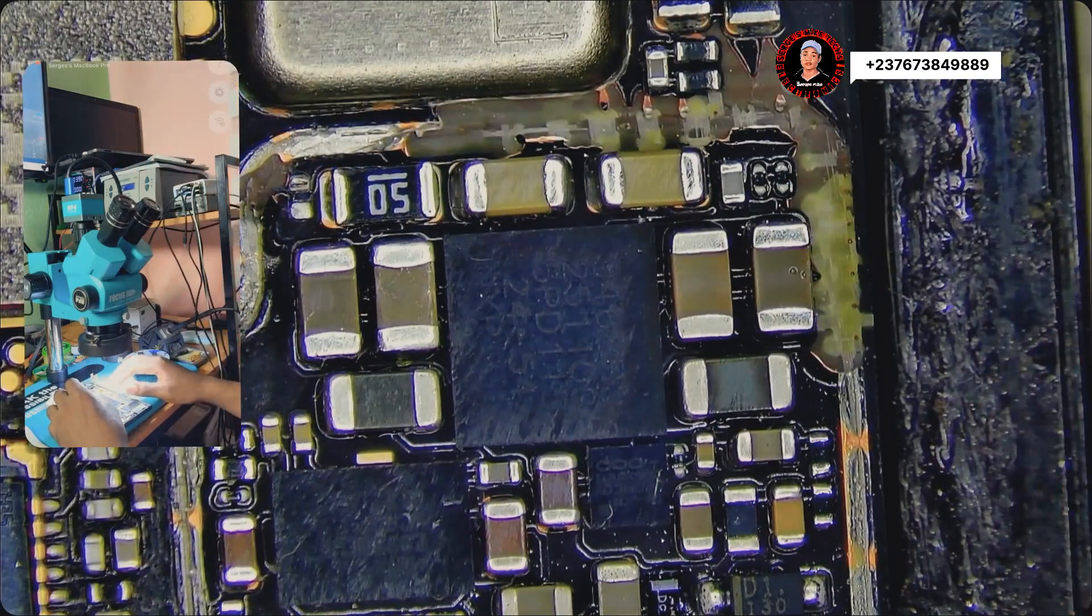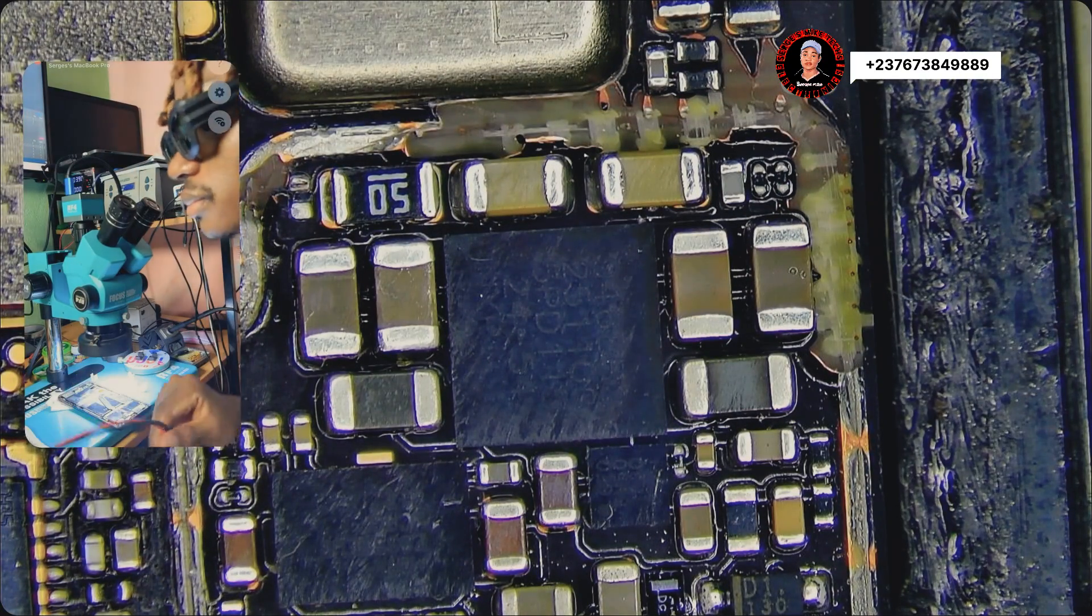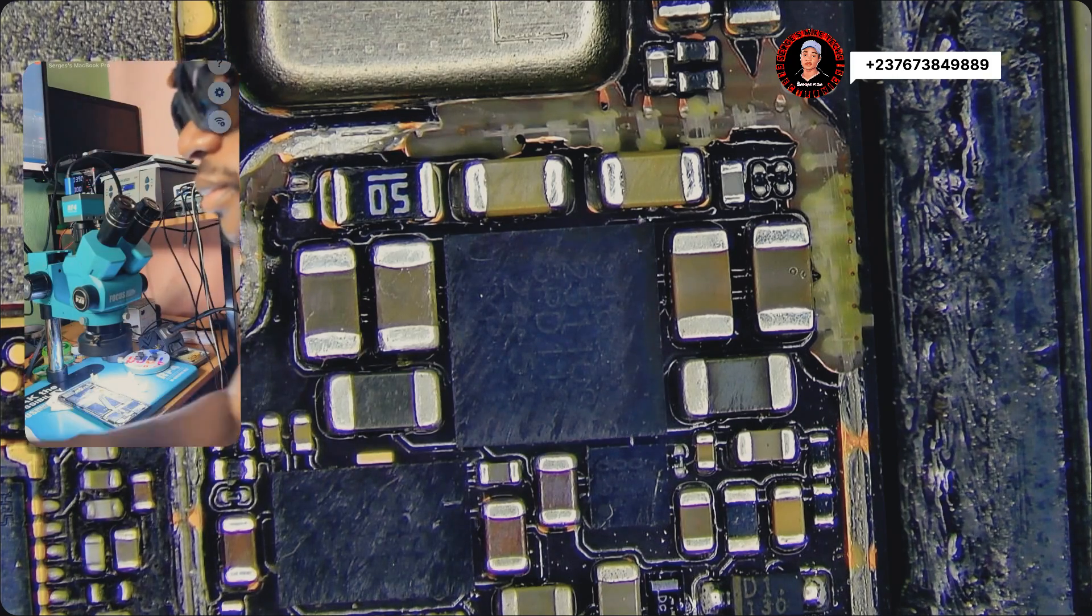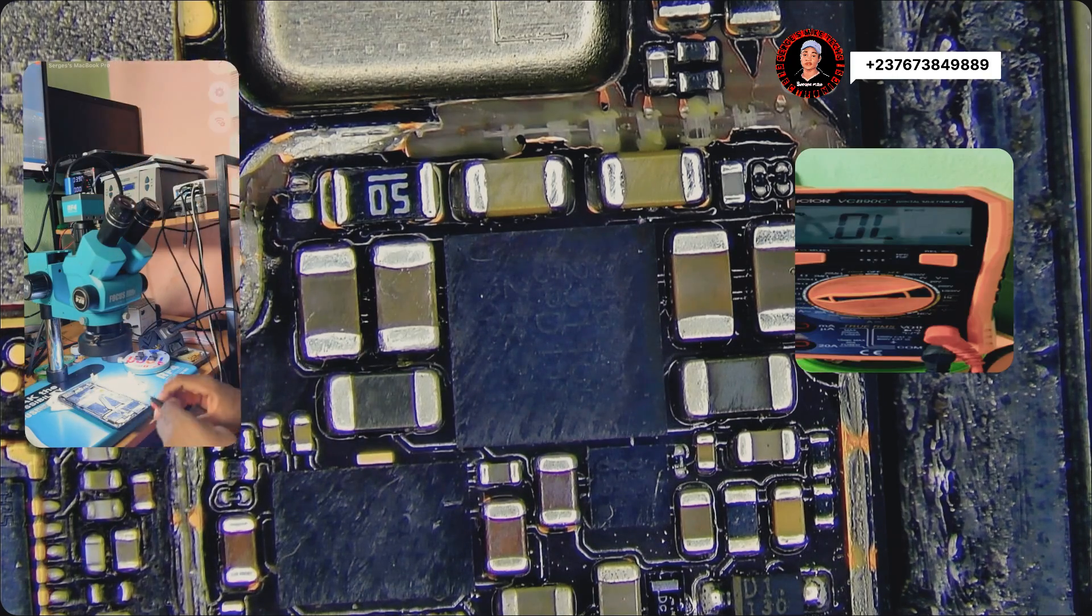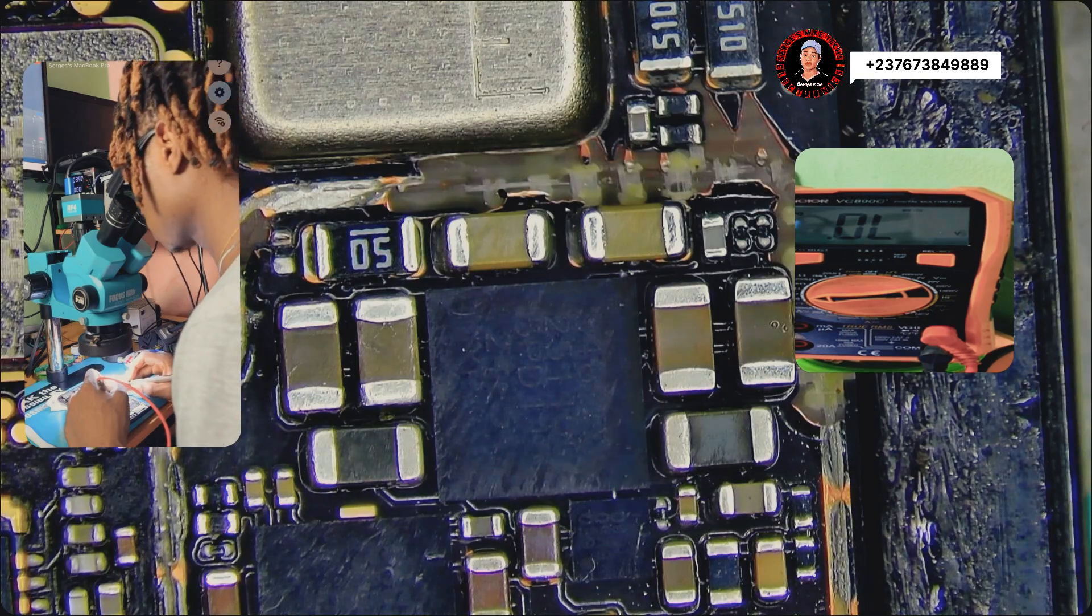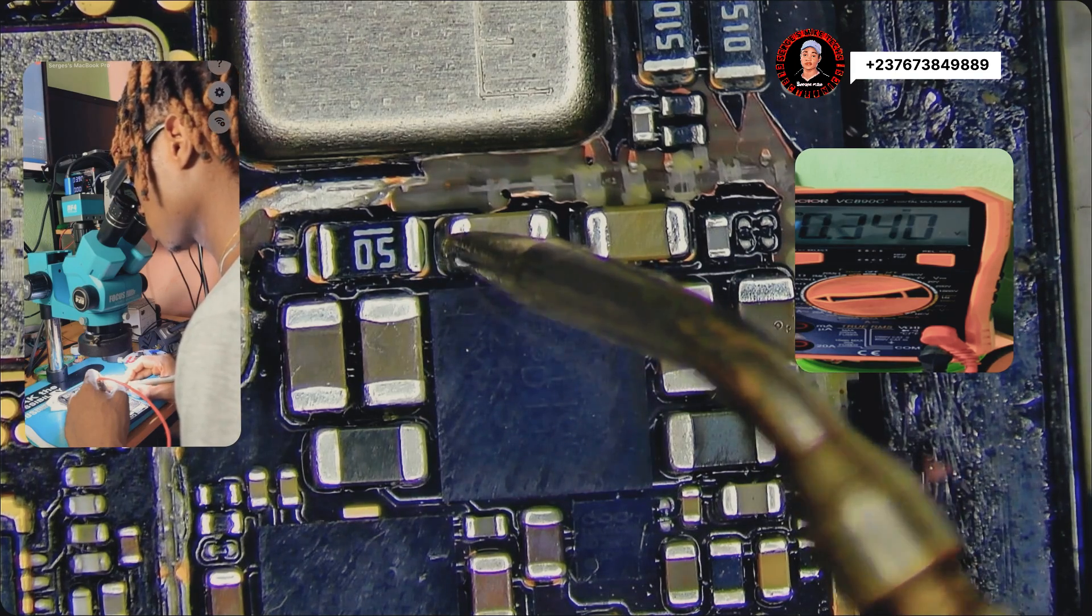Here we have the charging IC right there, and I'm going to use my multimeter. That's my multimeter screen. I send my multimeter to continuity test mode and test the input, which is the V-BAR of the charging IC. After checking the inputs, you can see it's okay, the reading is okay.